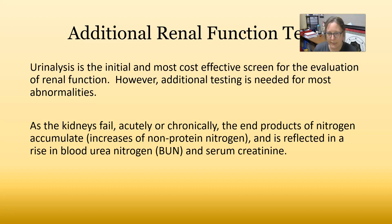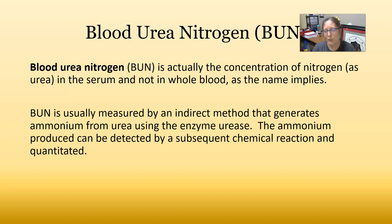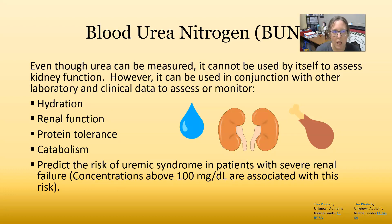Blood urea nitrogen (BUN) is actually the concentration of nitrogen as urea in the serum, not in whole blood as the name implies — it probably should have been named serum urea nitrogen, but BUN is what stuck. BUN is usually measured by an indirect method that generates ammonium from urea using the enzyme urease, and then that ammonium produced can be detected by a second chemical reaction to get an exact concentration.